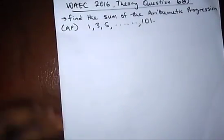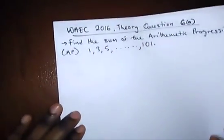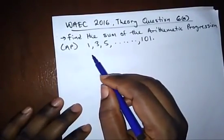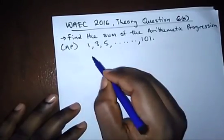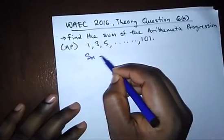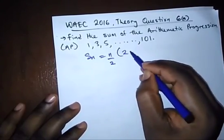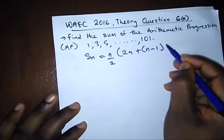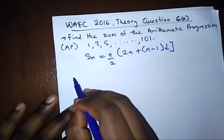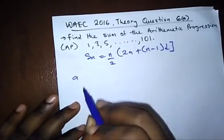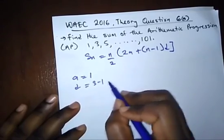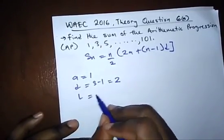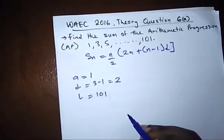Our final question is also a theory question from JAMB. It says: find the sum of the arithmetic progression 1, 3, 5, ..., 101. Remember our formula for finding the sum is Sn = n/2 × (2a + (n-1)d). Our first term is 1, common difference is 3 - 1 = 2, and last term is 101.